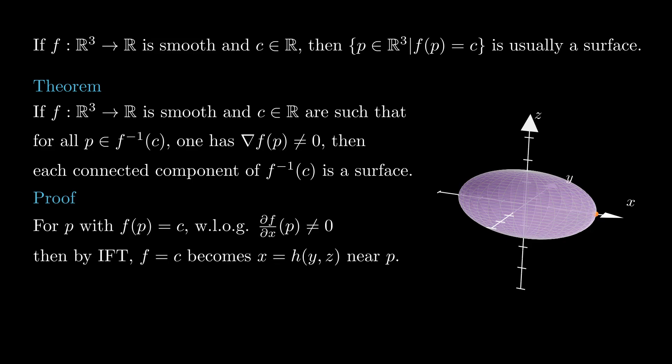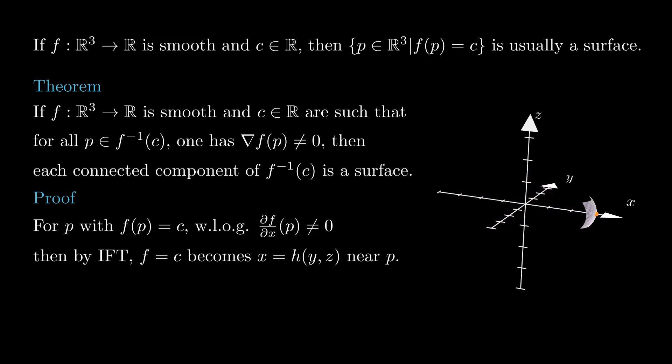For each p with f of p equals c, the condition of the gradient of f not vanishing at p means that at least one of the partial derivatives of f does not vanish at p, say, the partial derivative of f with respect to z.